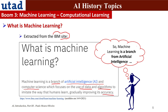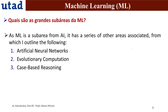So machine learning is in fact a branch of artificial intelligence. What are the main sub-areas of machine learning? This slide is in Portuguese, sorry. The three main sub-areas are: artificial neural networks, evolutionary computation, and case-based reasoning.